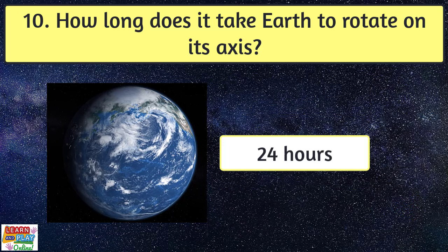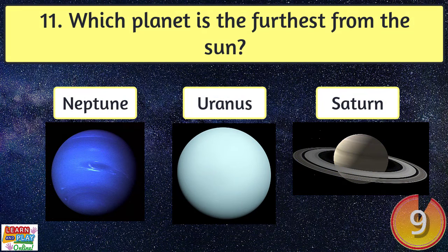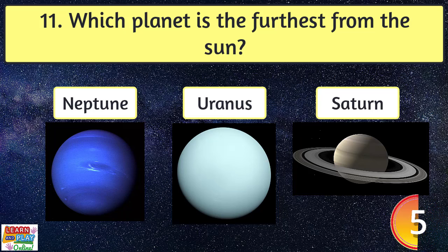24 hours. Question 11. Which planet is the furthest from the Sun? Neptune.